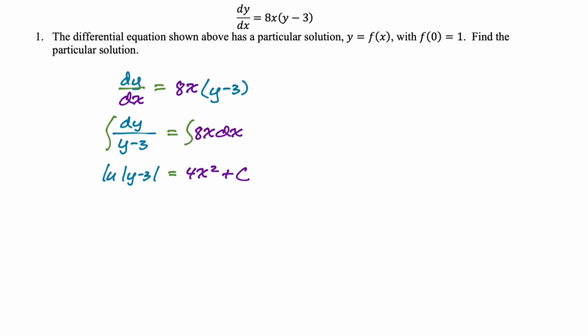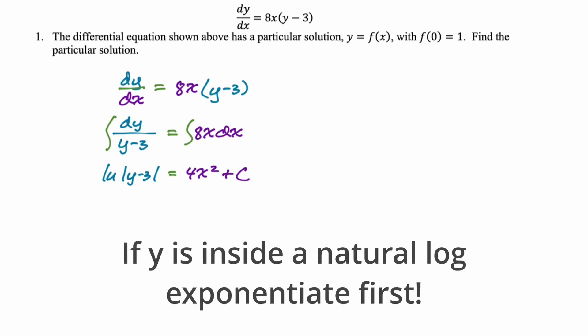So what I do is, if y is inside a natural log, I exponentiate before I solve for y. That kind of avoids the error, or the potential error, of having to deal with that absolute value.